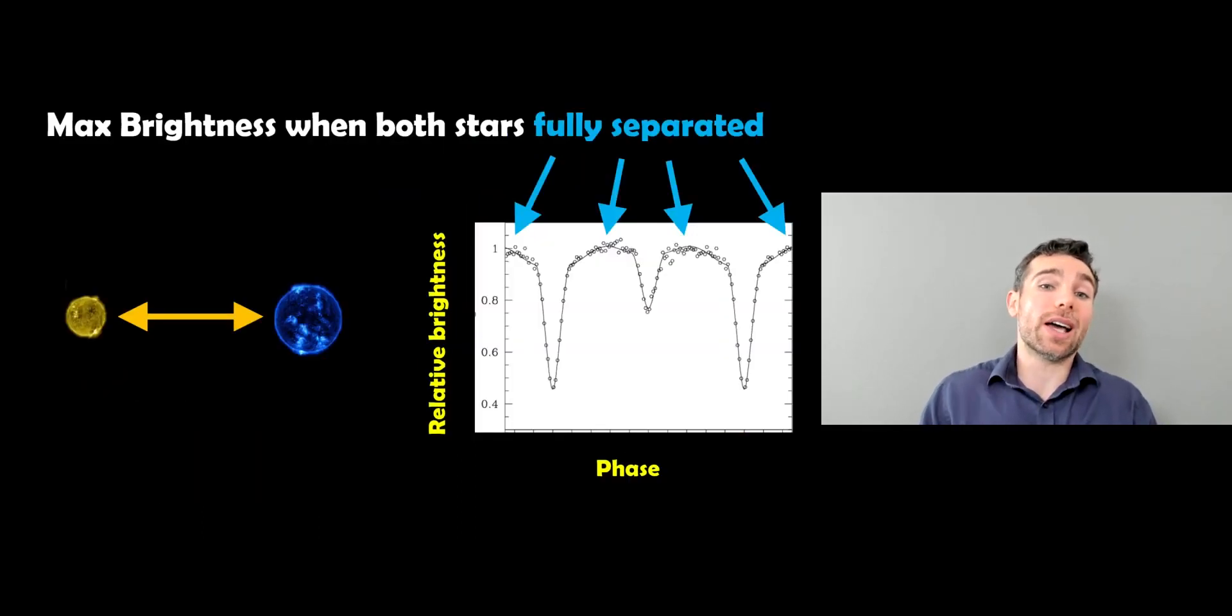So what do we mean by an eclipsing binary? You've got two stars and it means that as we look at them, they actually pass in front of each other, so they actually eclipse each other. And if you were to look at the brightness of that, because we can't resolve individual stars, we can only really see the light coming from both of them, we can't individually see each one.